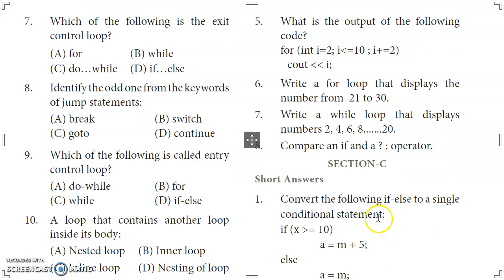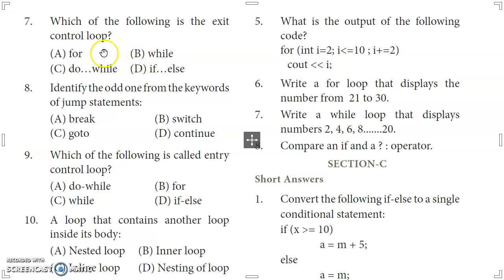At the 7th question: which of the following is the exit control loop? The three types of loops are for, while, and do-while. The for loop and while loop are entry control loops, while do-while is the exit control loop. So option C is the right answer.